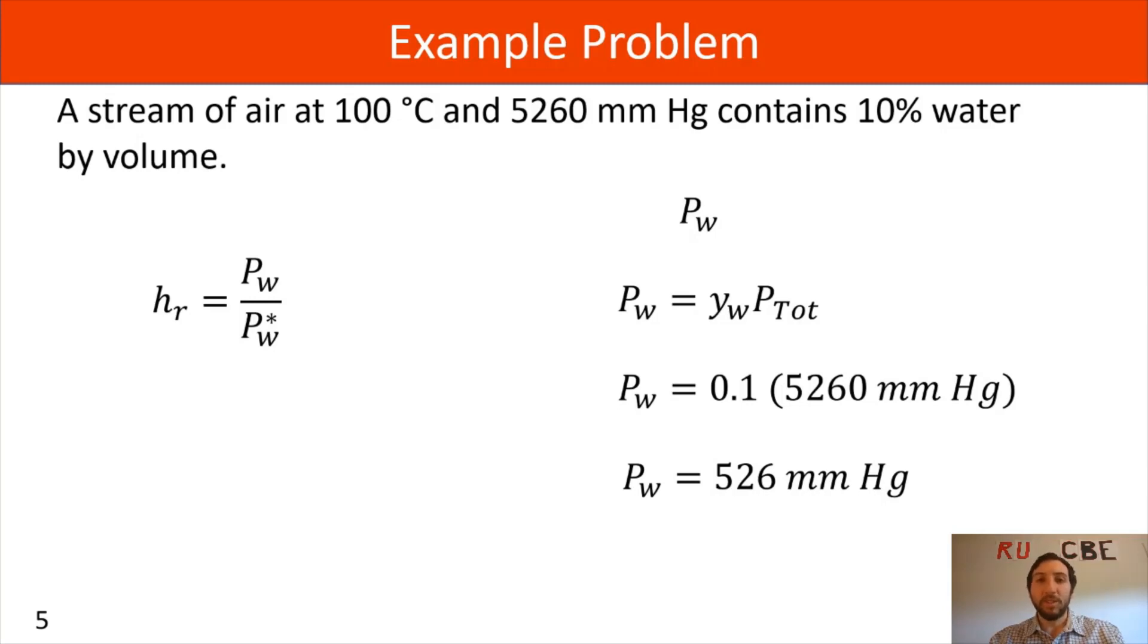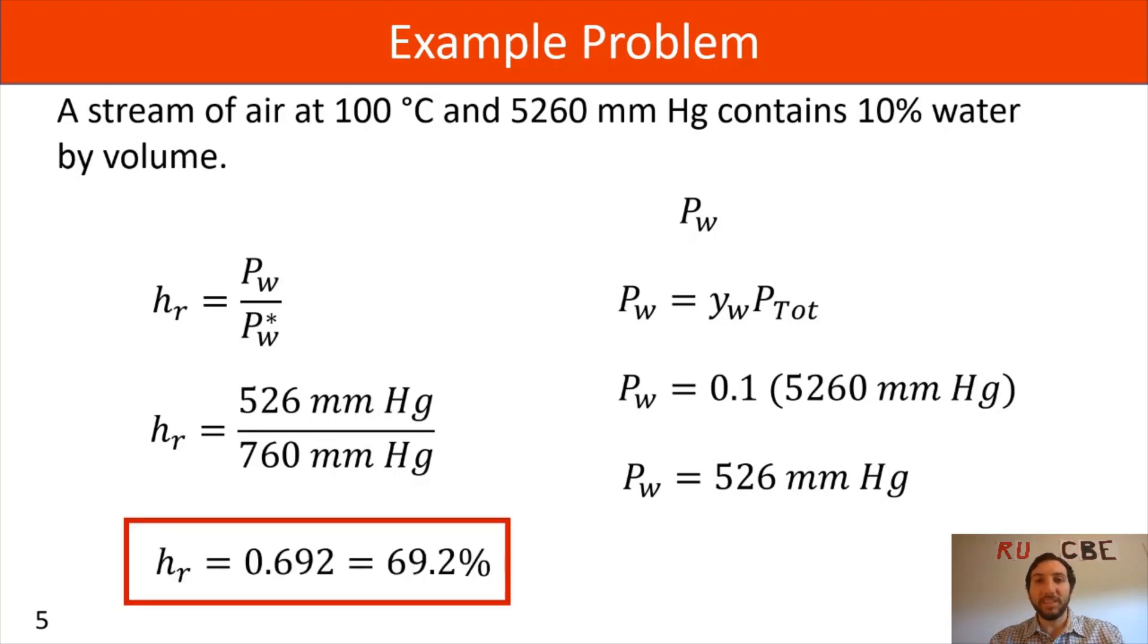Now we can substitute the two values we've calculated into our relative humidity equation and we will get a relative humidity of 69.2 percent.